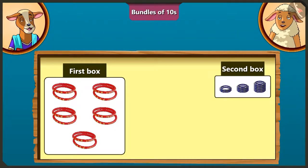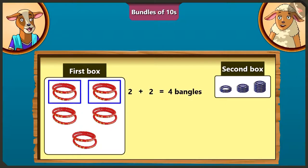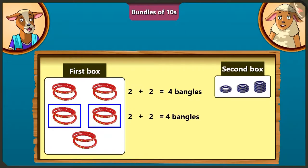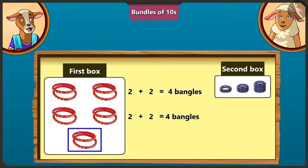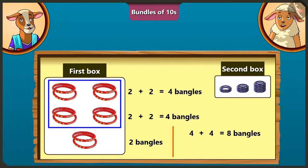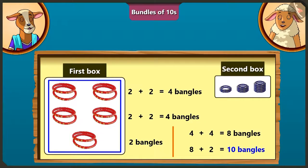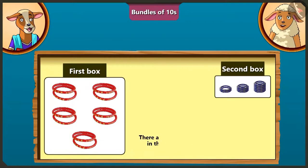There are 2 and 2, 4 bangles in the first row. There are also 2 and 2, 4 bangles in the second row, and there are 2 bangles in the third line. So we can also count bangles this way. We get 8 by adding 4 plus 4, and 10 by adding 2 with the 8. So there are 10 bangles in the first box.